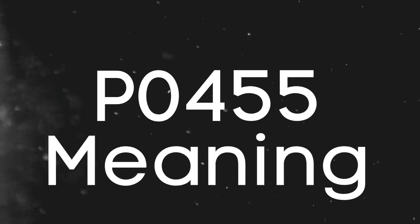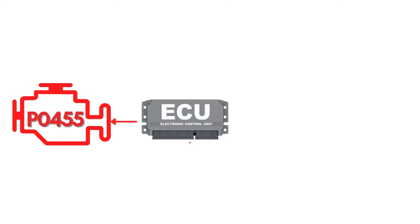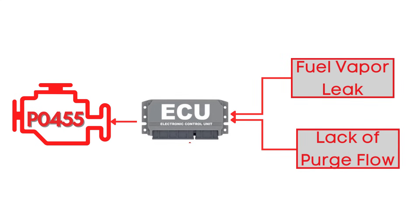First things first, let's break down what the P0455 code actually is. This code gets triggered when the ECU detects a condition in the EVAP control system that indicates a fuel vapor leak or a lack of purge flow in the system. In simple terms, it means the system has detected a large leak in the fuel vapor containment system.